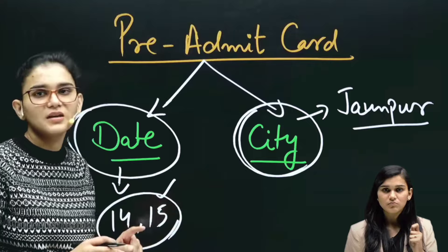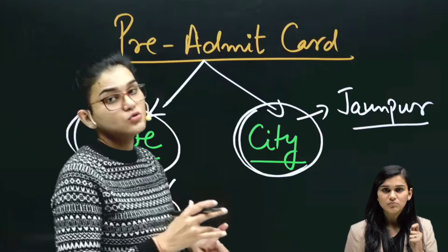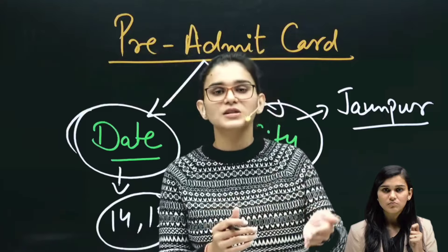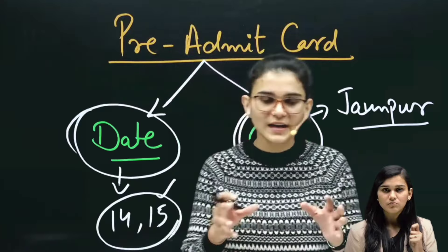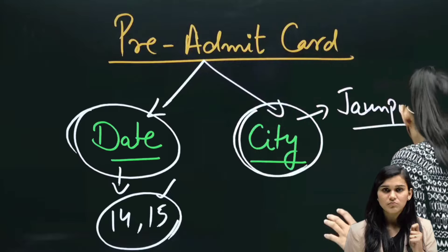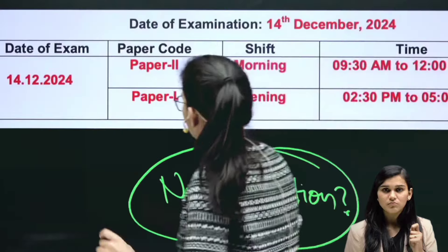So two things are revealed by the pre-admit card: one is the date, and the other is the city center — meaning the city of the exam. The exact school or venue is not told, but you will know that your paper will be held in this particular city.